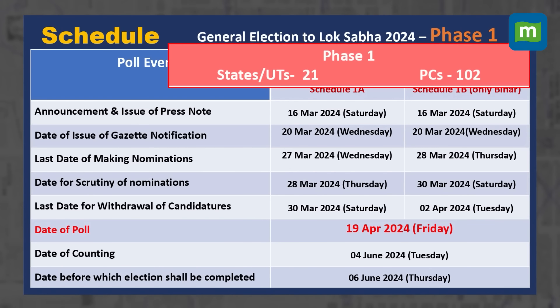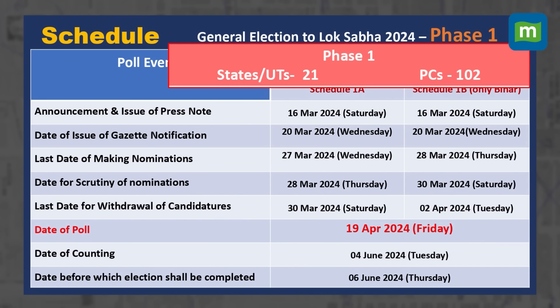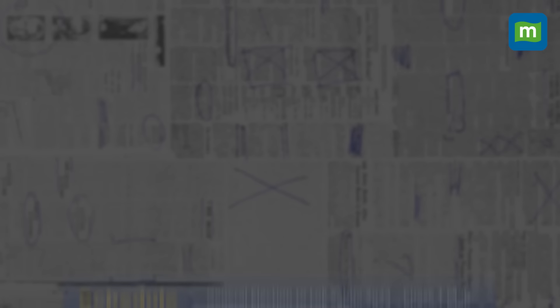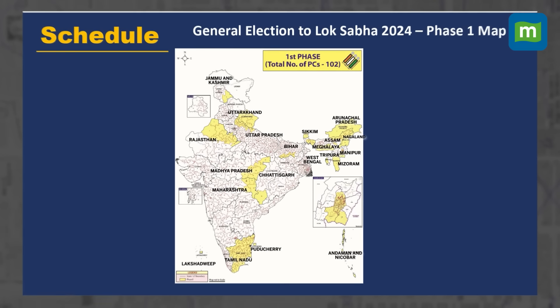The first phase will take place on 19th April 2024. In phase 1, 21 states and union territories and 102 parliamentary constituencies will go under polling.